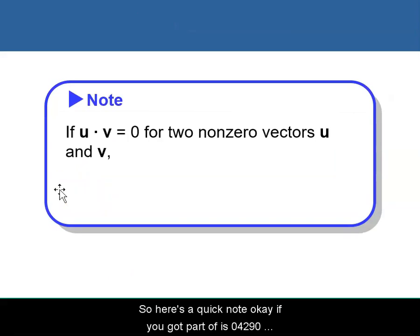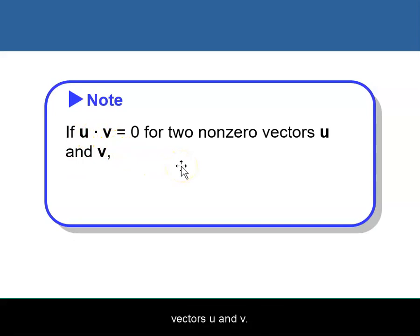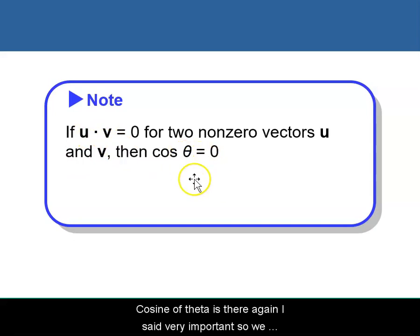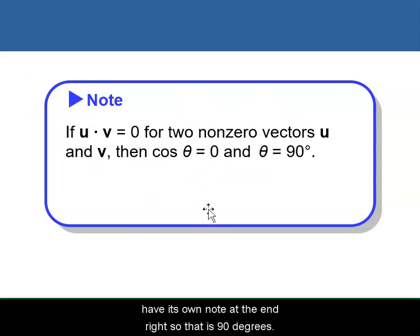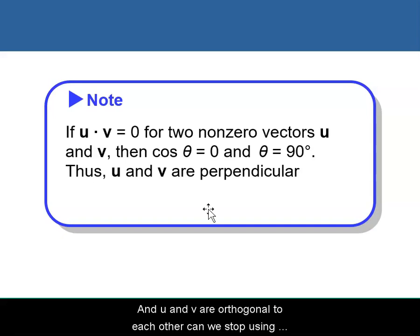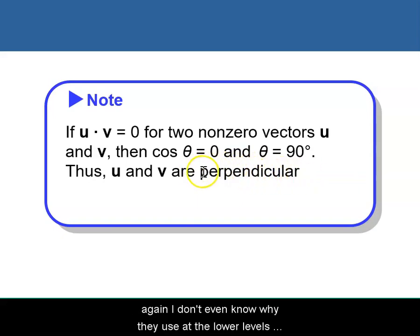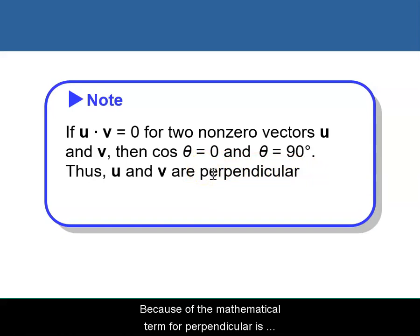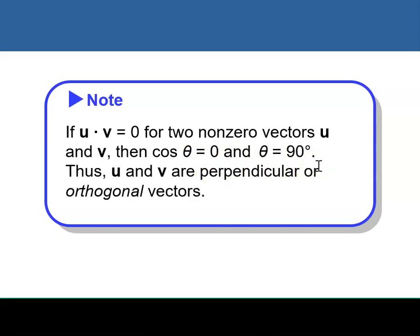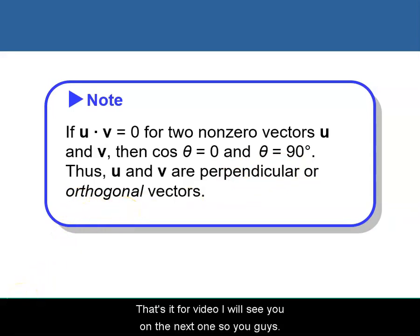Quick note: if u · v = 0 for two non-zero vectors u and v, then cos(θ) = 0 and u and v are orthogonal, meaning theta = 90 degrees. We stop using the word 'perpendicular' after precalculus — the mathematical term is 'orthogonal.' That's it for our video. I will see you on the next one. See you guys.